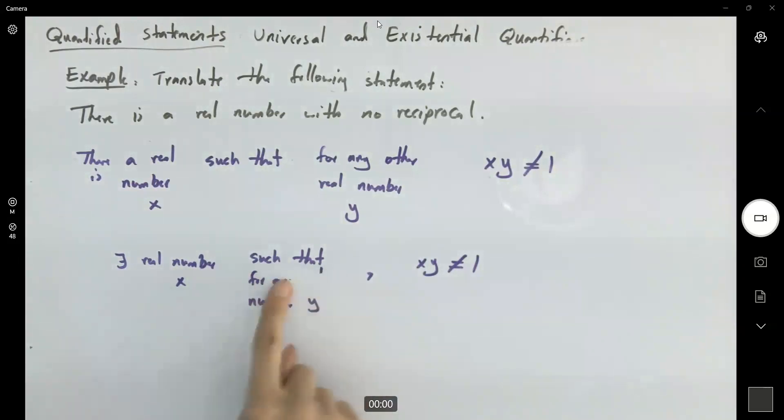For any real number, so for any real number y. We're just writing this down in a quantified statement. Now, here we're using two quantified statements, there is for all. Note that the comma goes here.